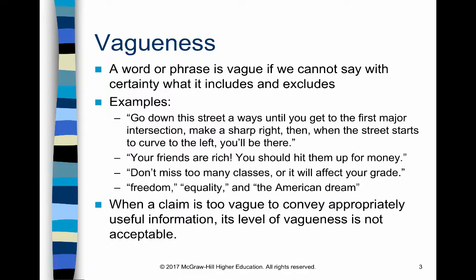The first way in which we might be misunderstood is because of vagueness. A word or phrase is considered vague if we can't say with certainty what it includes or excludes. Sometimes vagueness is deemed necessary so that something can be interpreted in different ways according to existing conditions. For instance, most of the time a speed limit is just that — a speed limit — and a cop can pull you over if you go faster than the posted limit.